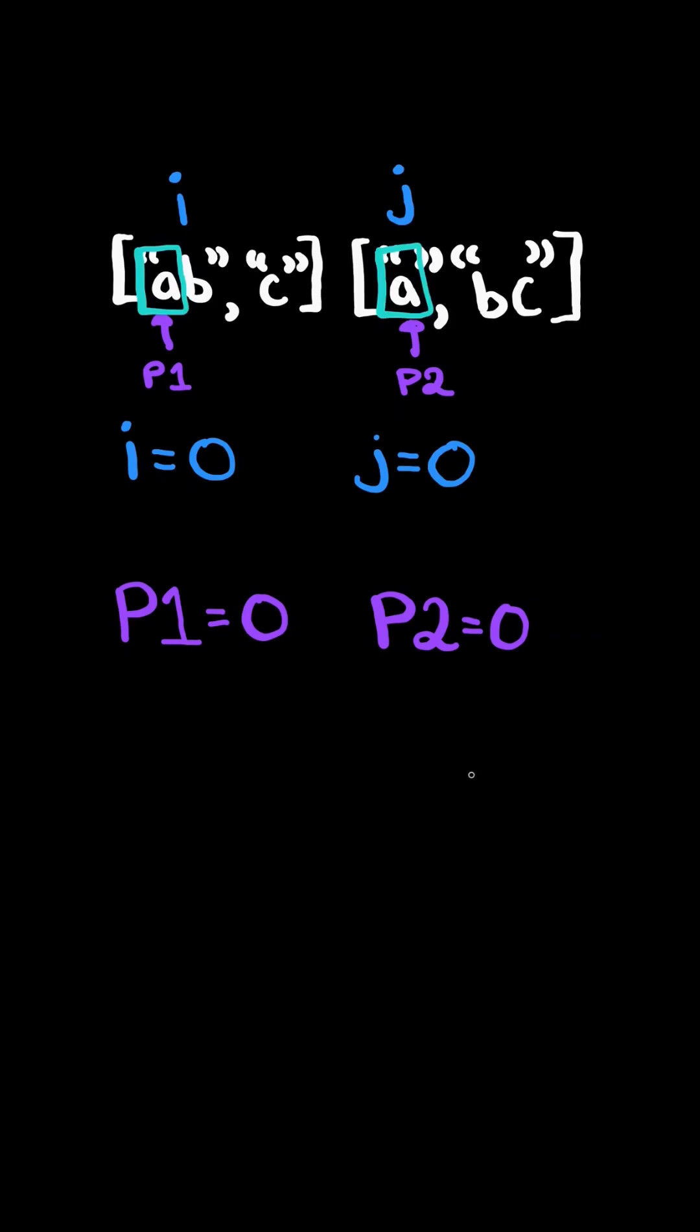At each iteration, we compare the values at P1 and P2 and as long as they're equal, we continue.